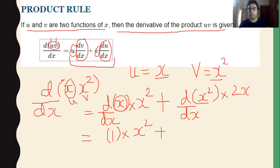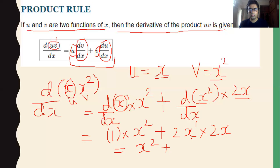For d/dx of x, we apply the power rule and get 1. So 1 into x² gives x². For d/dx of x², applying the power rule n·x^(n−1), we get 2x. So x² plus... and working through we get the result.